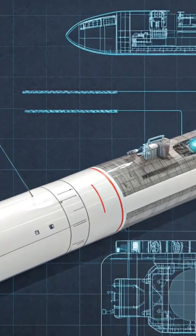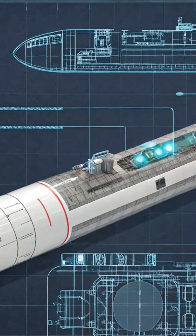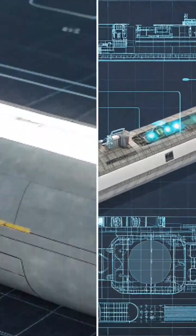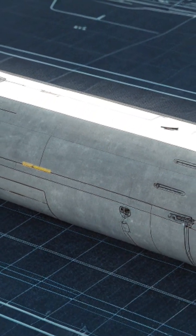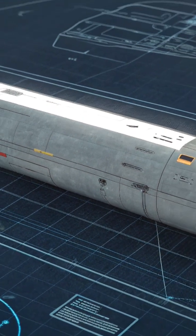Aap note karein, do front side views yahan clear dikhaye hain. Pehla ek detailed elevation diagram hai, jo missile ki overall height aur design ko show karta hai.